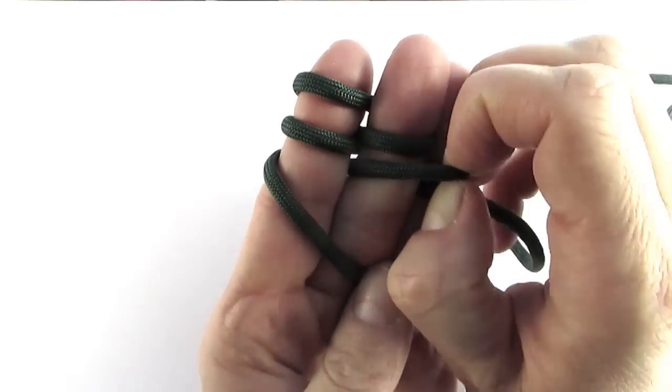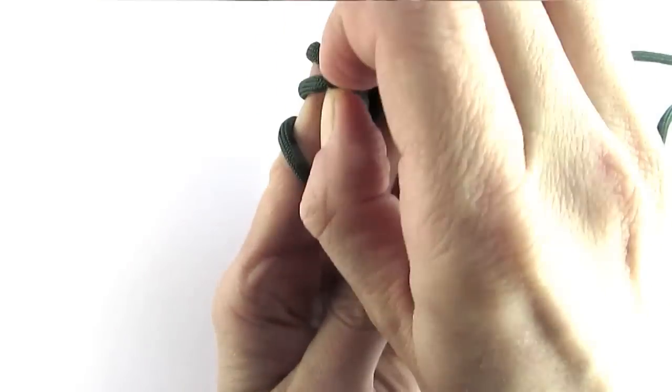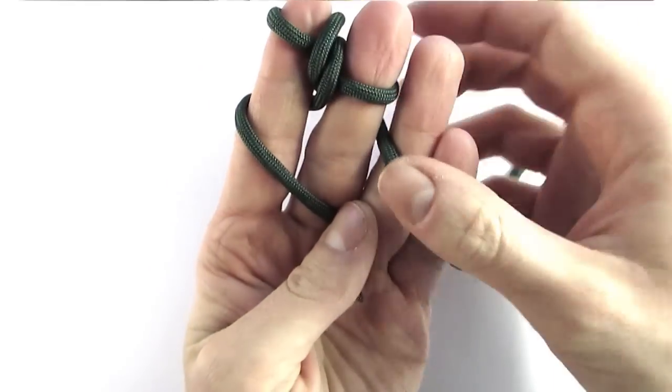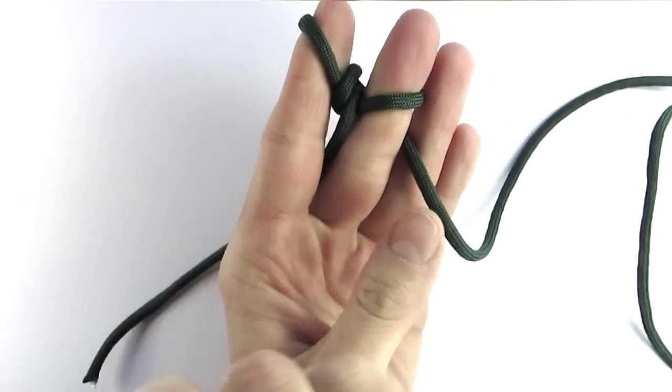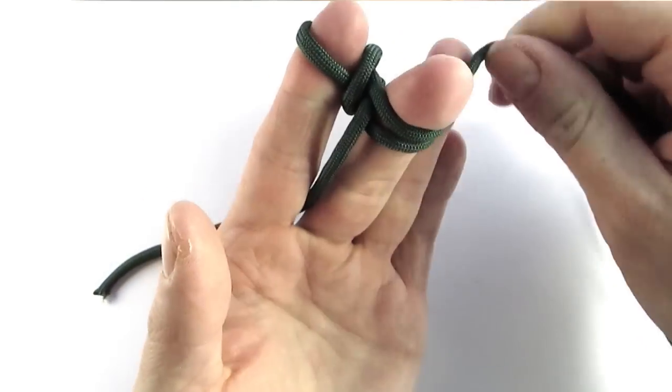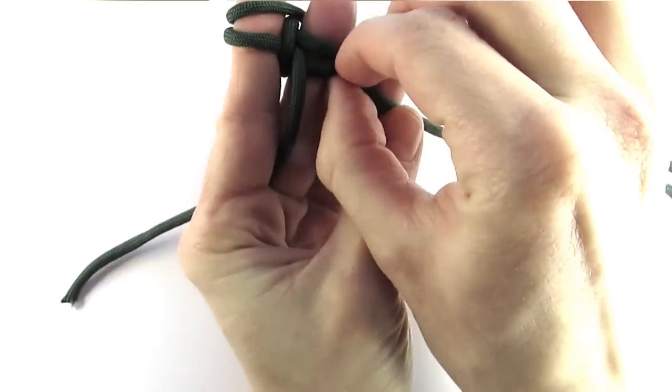We're then going to take the bottom sections and simply place them over the top ones, then pull on the left piece of cord. We're then again going to make an eight shape to get our top section and pull the bottom section over it again, then pull on the left section again.